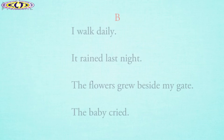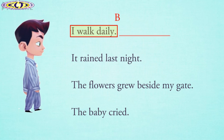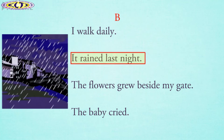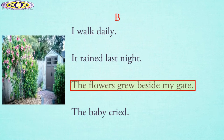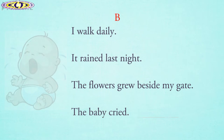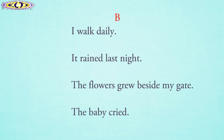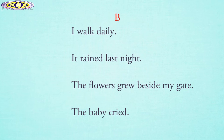Now come to List B and please repeat after me. I walk daily. It rained last night. The flowers grew beside my gate. The baby cried. Here we can see in List B that the verbs used in these sentences — walk, rain, grow, and cry — are used without an object. So these verbs are intransitive verbs.